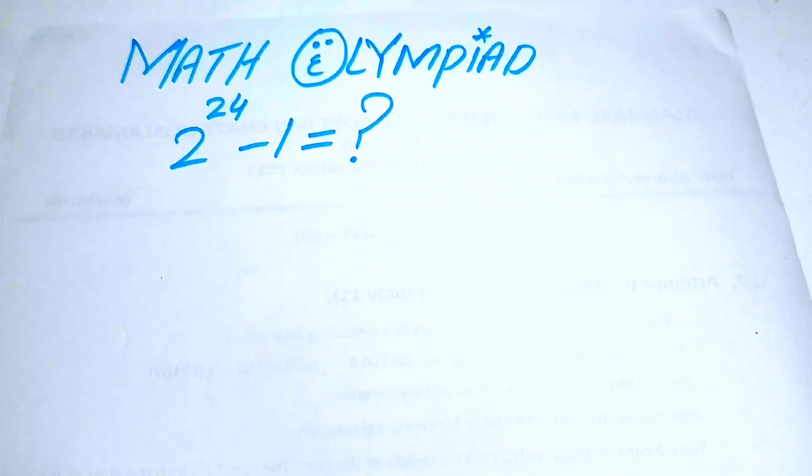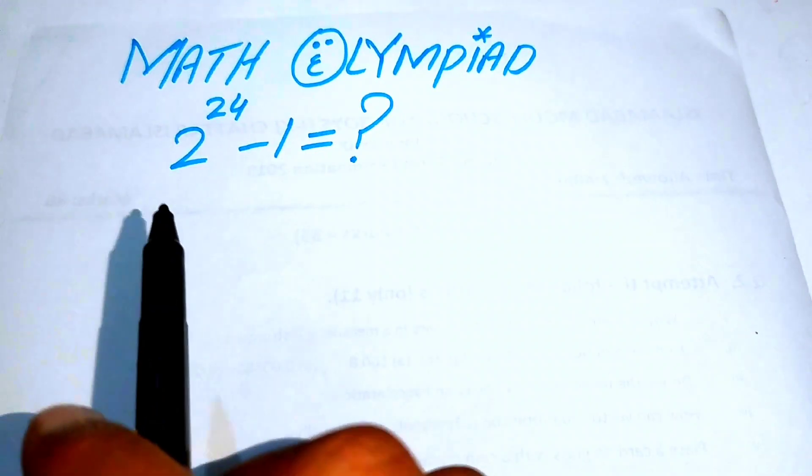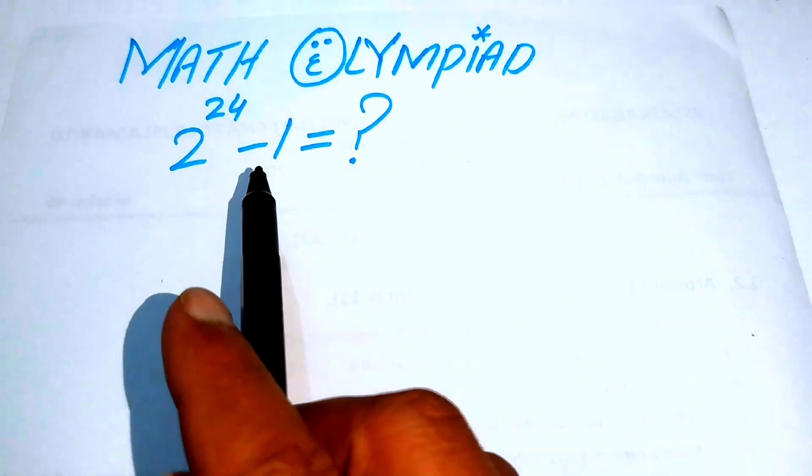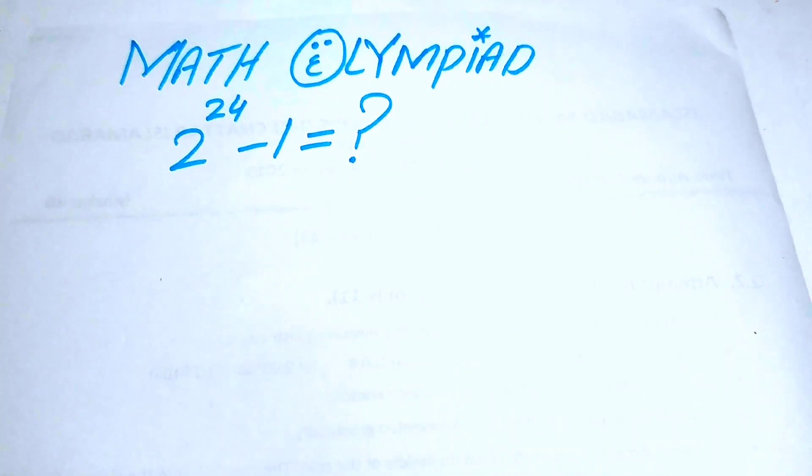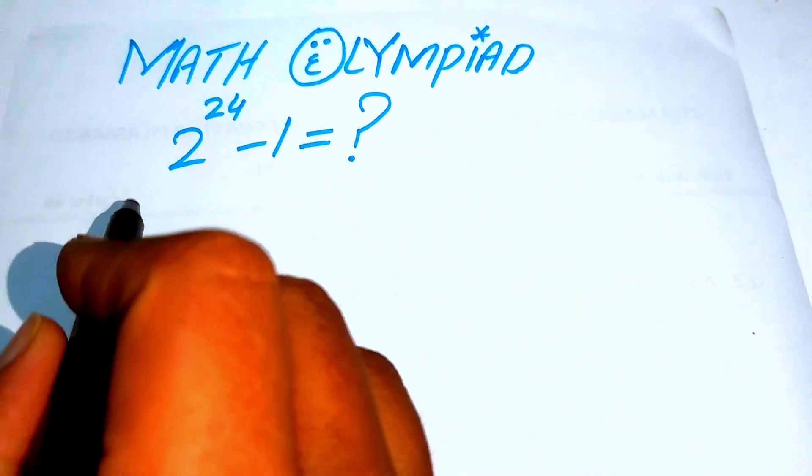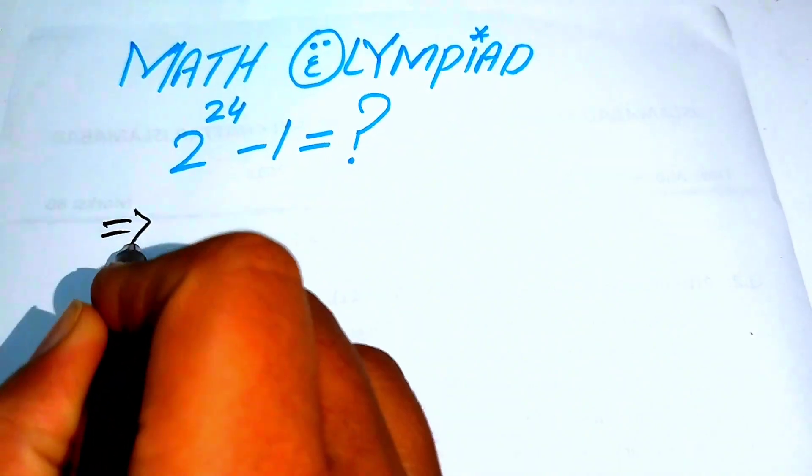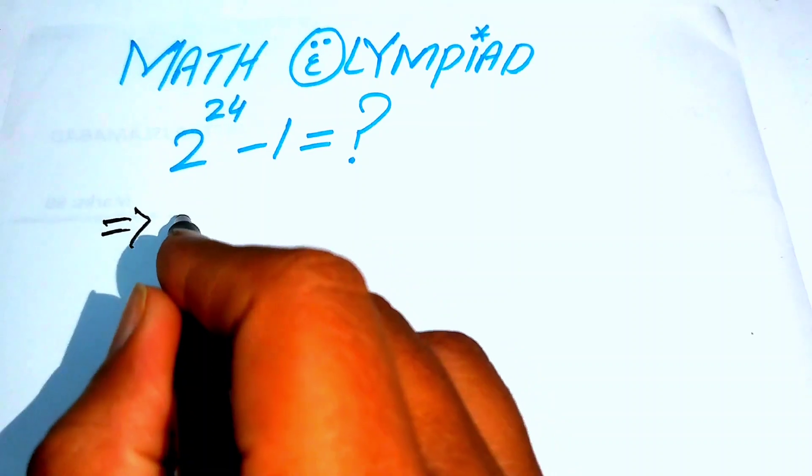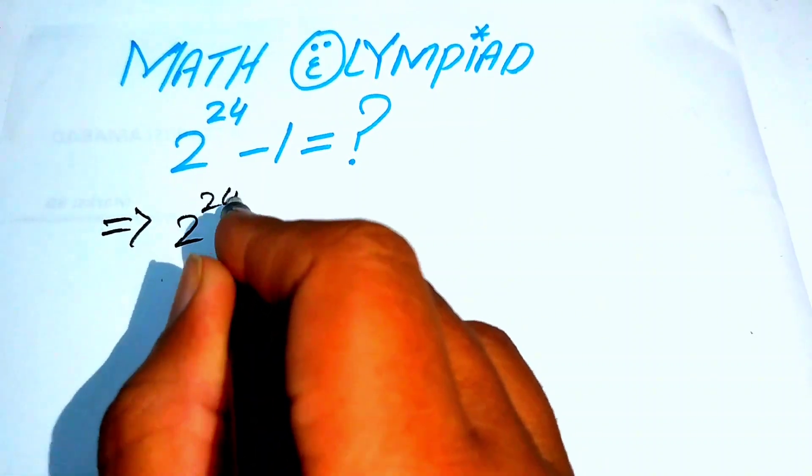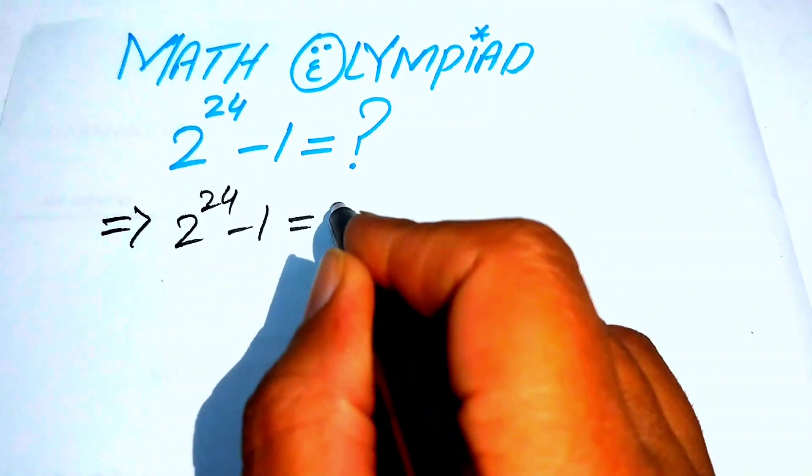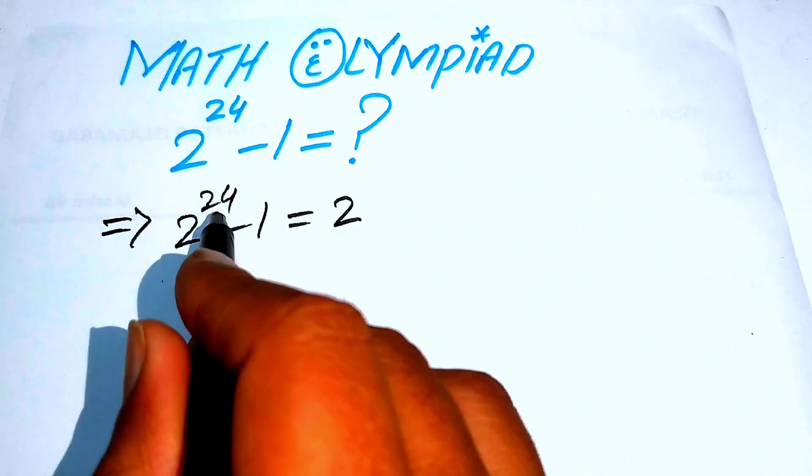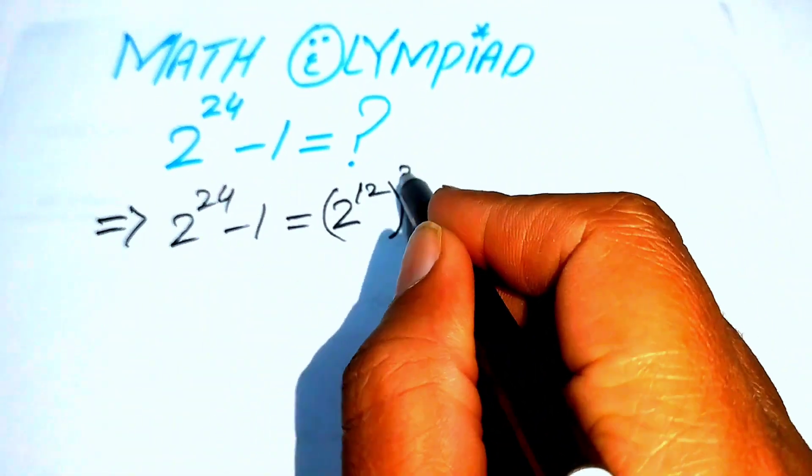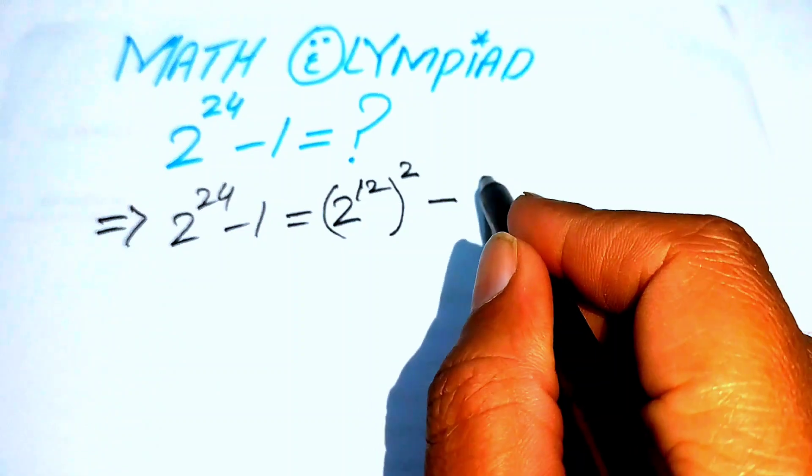Hello everyone, welcome to solve this nice math algebra problem. Here we find the value of the expression 2 to the power of 24 minus 1 without using a calculator. So here we first rewrite this expression because we have 2 to the power of 24 minus 1. We rewrite this as 2 to the power of 24 as 2 to the power of 12 and its whole square minus 1.